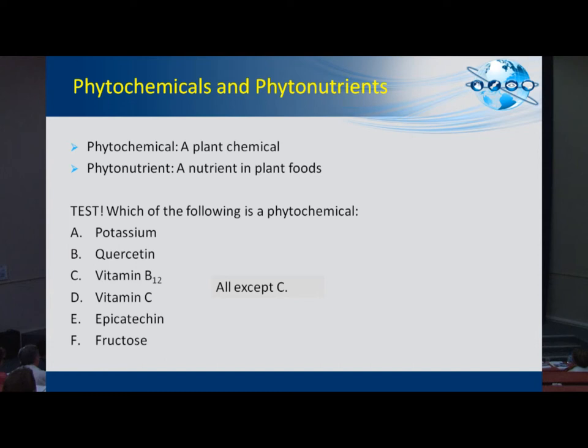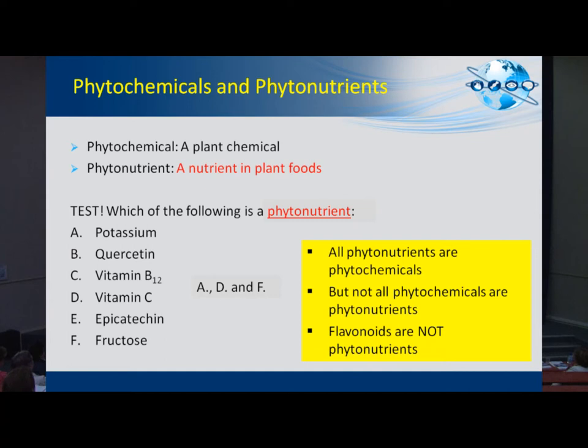All the others are phytochemicals — chemicals found in fruits and vegetables. Now the more tricky question is: which of those are phytonutrients? A lot of people would say quercetin and epicatechin are flavonoids and therefore phytonutrients — but that's not true. The actual phytonutrients among these are potassium, vitamin C, and fructose: chemicals in plants that are nutrients, hence phytonutrients. All phytonutrients are phytochemicals, but not all phytochemicals are phytonutrients.